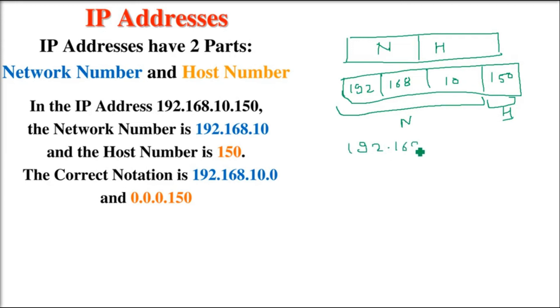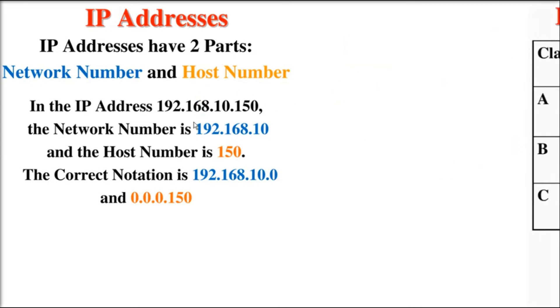For the network part, you write 192.168.10.0 - this is your network number or network ID. In the host part, you put zero for the network portion. For host ID, only the host part is written (0.0.0.150) and the network part is kept zero.